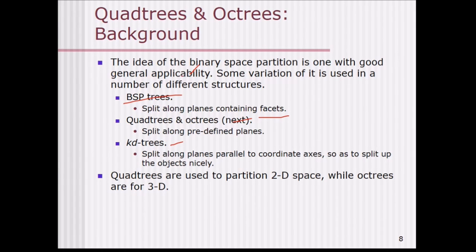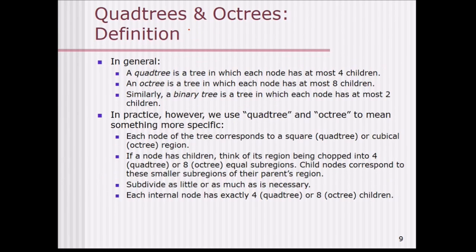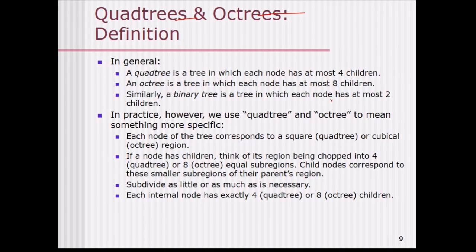Quad means 4 and oct means 8. Quad trees are used to partition 2D space, and oct trees are used to partition 3D space. A quad tree is a tree in which each node has at most 4 children — you can have 0, 1, 2, 3, or 4. Similarly, a binary tree has at most 2 children.